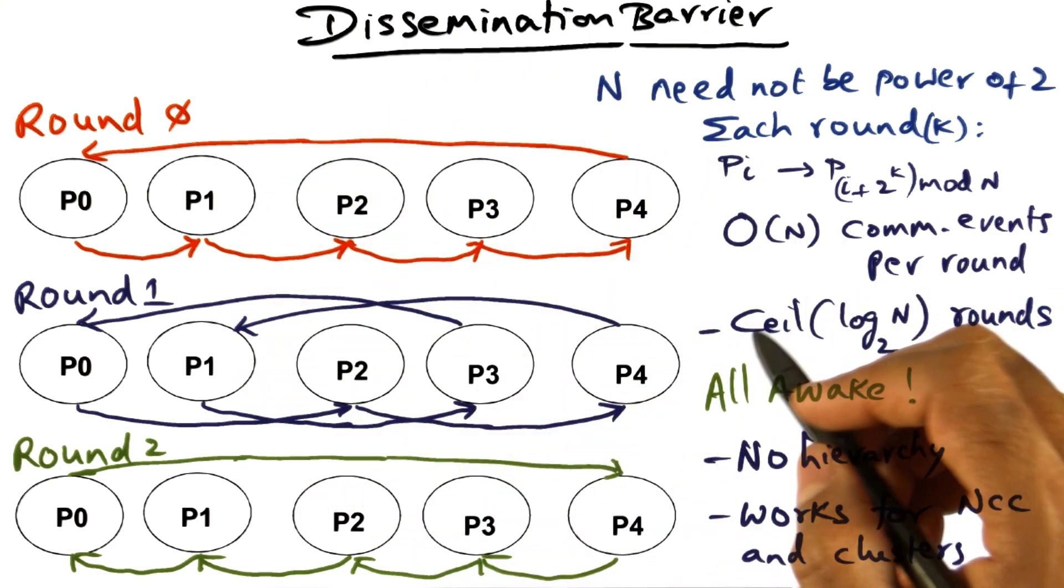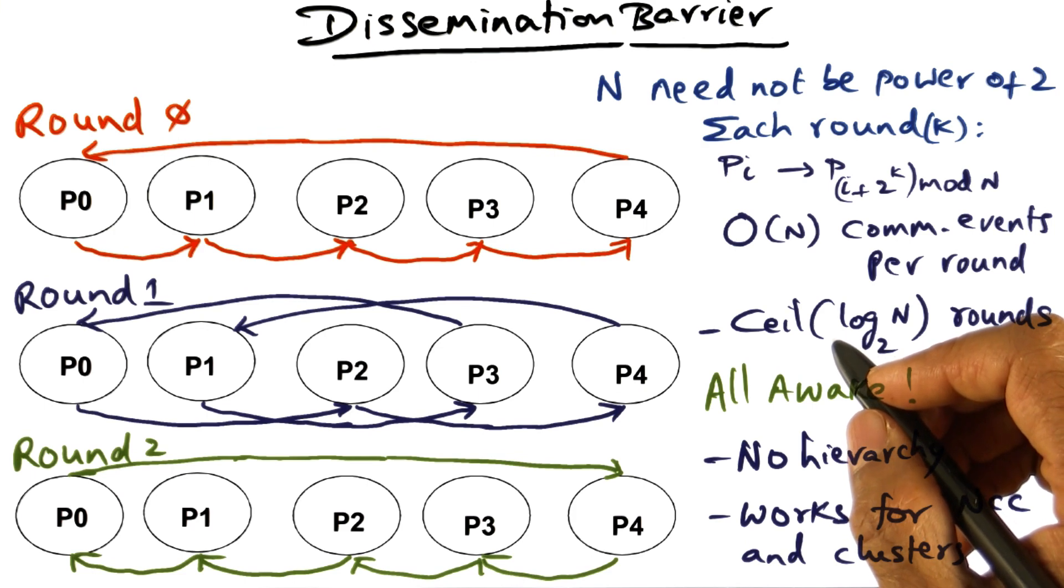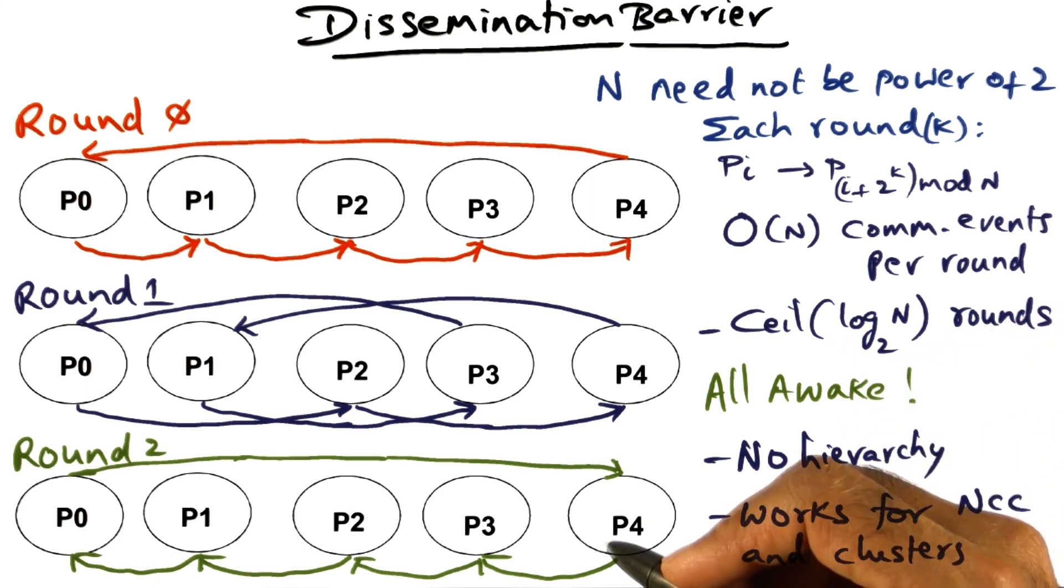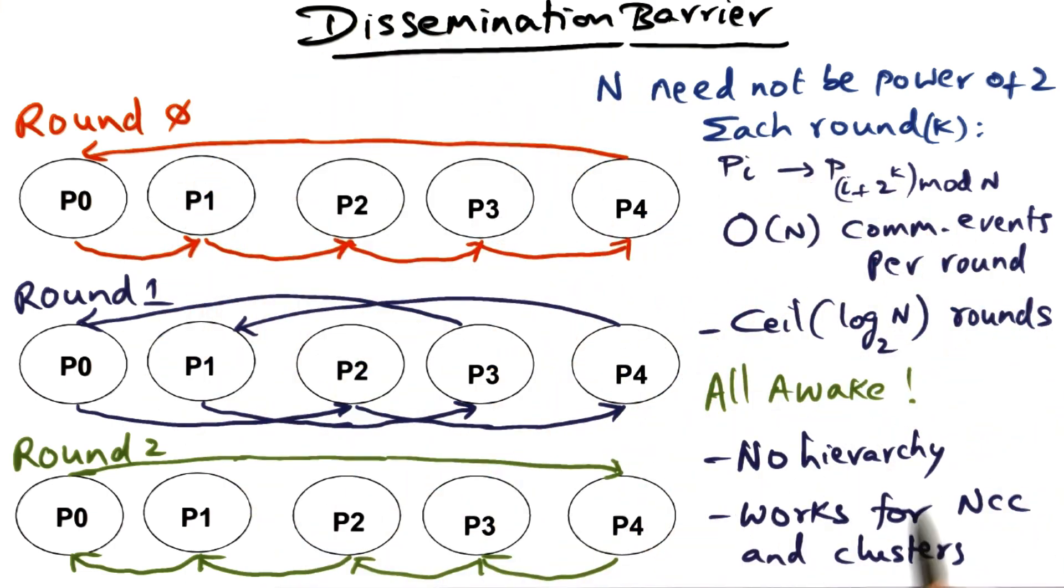Compare that to the communication complexity of the tournament or the tree barrier. In both of those cases, the communication complexity was only log n. Because of the hierarchy, as you go towards the root of the tree, the amount of communication shrinks. So the amount of communication in those algorithms is only order of log n, whereas in this dissemination barrier, since there is no hierarchy, the total amount of communication in the algorithm is order of n log n.